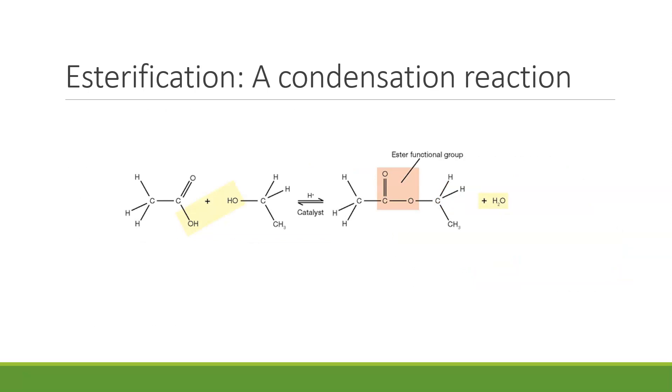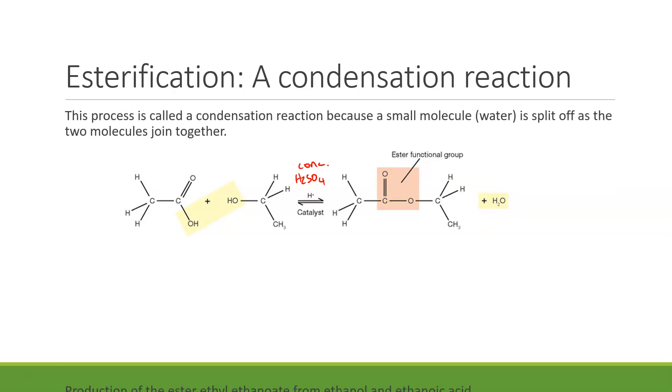For our esterification, we have the carboxyl of one molecule reacting with the hydroxyl of another in the presence of a sulfuric acid catalyst, typically concentrated, so we say conc H2SO4. We produce the ester functional group and water. This is a condensation reaction. The product here will be ethyl ethanoate, remembering that the -yl comes from the alcohol, and the -anoate includes the carbonyl carbon and is from the carboxylic acid.